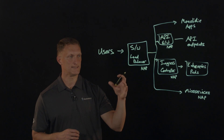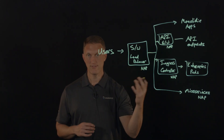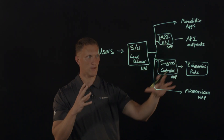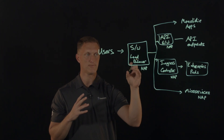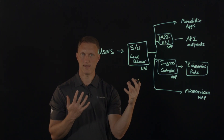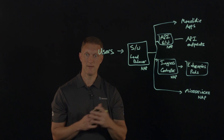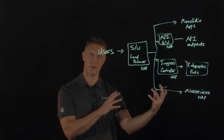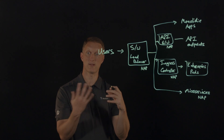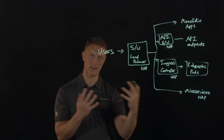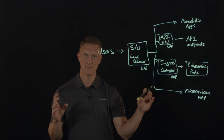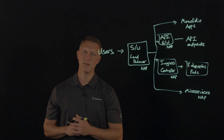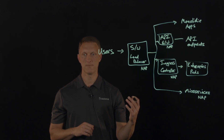Another thing I wanted to highlight is that NGINX App Protect API protection does more than just client-server communication. This also protects machine-to-machine traffic — east-west traffic — which is an important distinction to mention.